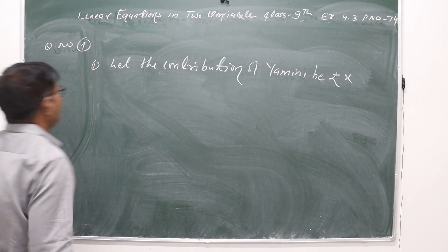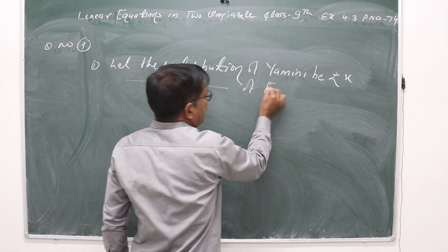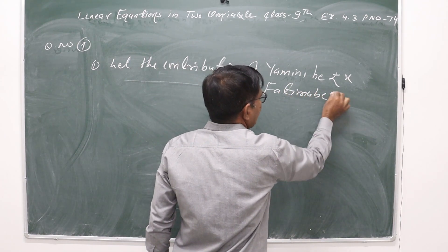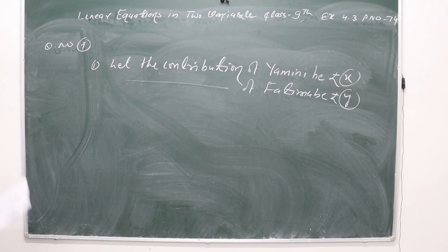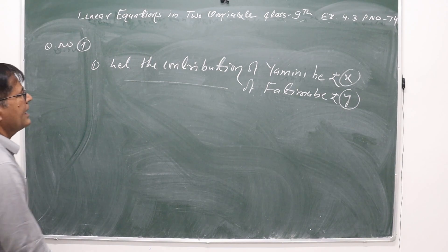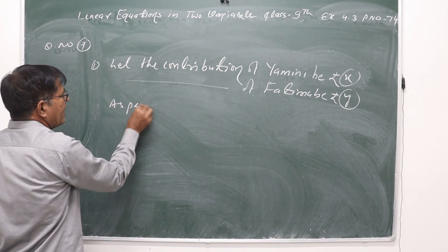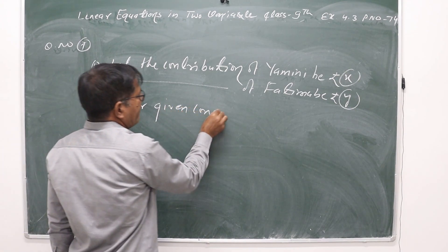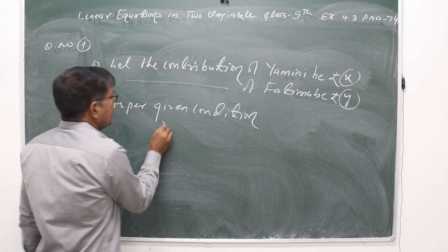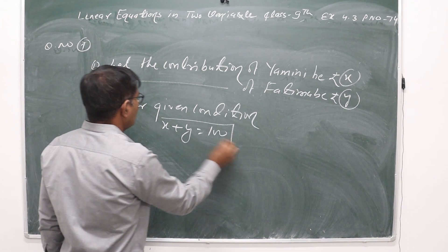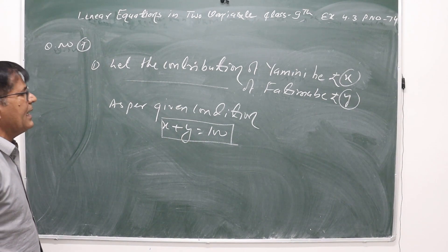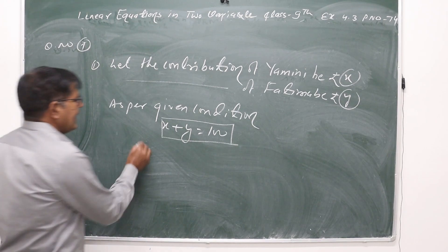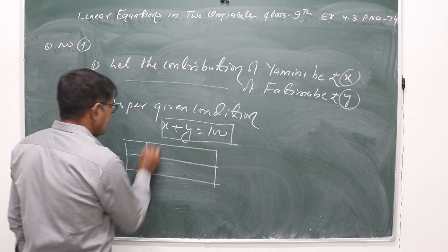Let the contribution of Fatima be Rs. y. Yamini's contribution is Rs. x and Fatima's contribution is Rs. y. The total contribution is Rs. 100. As per the given condition, x + y = 100. So the linear equation in two variables is x + y = 100. Now we have to plot the graph of this linear equation.